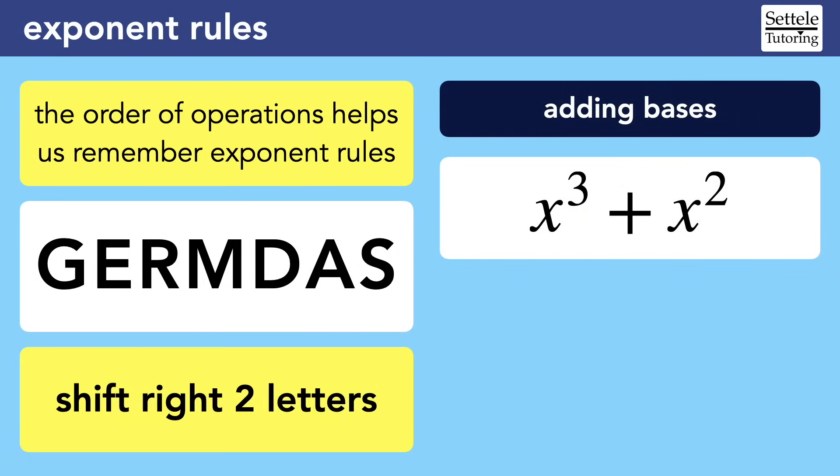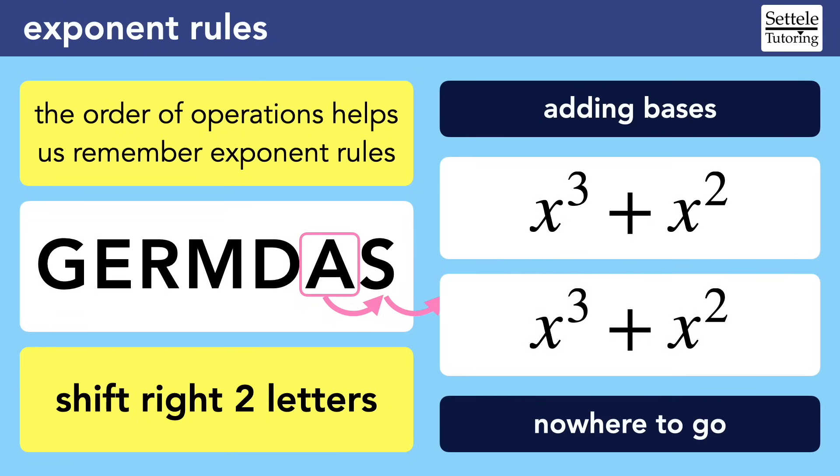Moving on, let's try applying the GERMDAS shift to bases that are being added. If we try to shift to the right two letters, we run out of letters. This is definitely a problem, and it's a reminder that we can't actually combine those exponents. You probably know that X to the third and X to the second are different types of terms, so they can't be combined. In most cases, we're going to leave this expression alone.